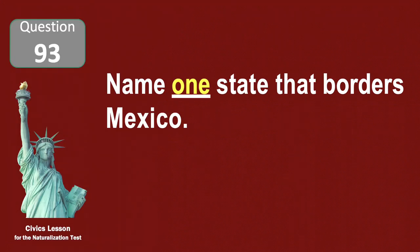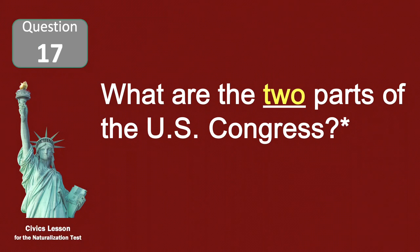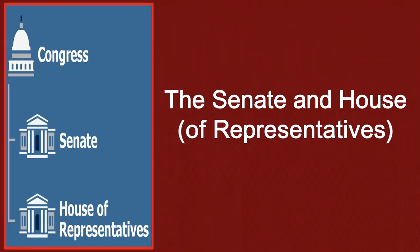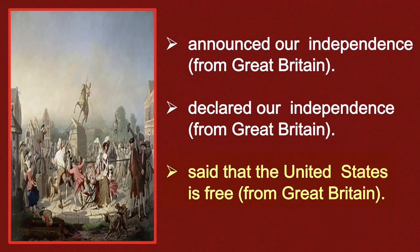Name one state that borders Mexico. California. What are the two parts of the U.S. Congress? The Senate and House. What did the Declaration of Independence do? It declared that the United States is free.